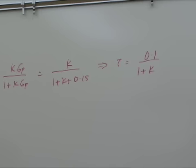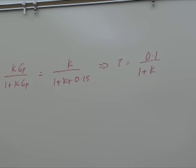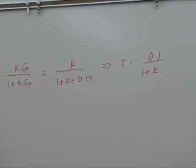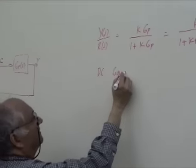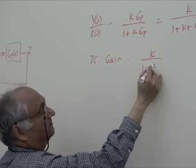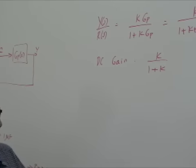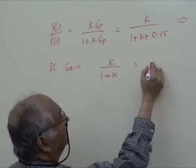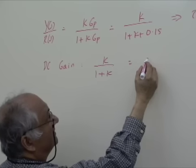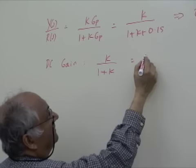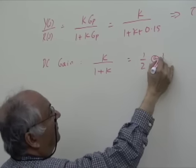As K increases the closed loop system will respond faster and faster. But what about the DC gain? The closed loop system is K over 1 plus K. So at K equal to, as K increases the DC gain will be larger. So it will be half at K equal to 1.